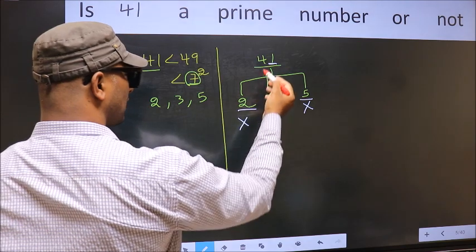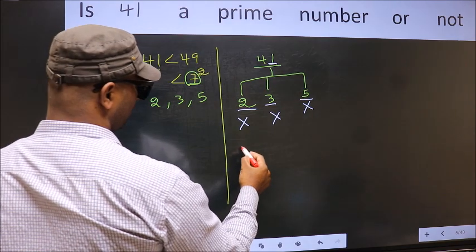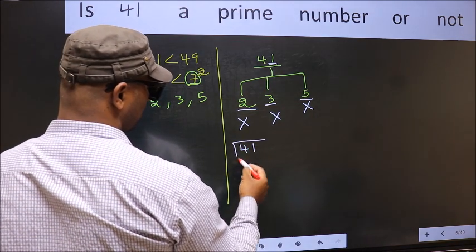So, 41 is not divisible by any of these numbers. So, 41 is a prime number.